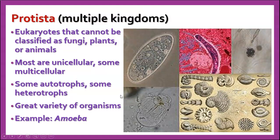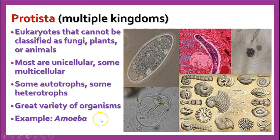The Protista — multiple kingdoms here. These are, by definition, eukaryotes that cannot be classified as fungi, plants, or animals. They're kind of like where you put stuff that doesn't fit anywhere else. I often describe them as being the junk drawer of the kingdoms — just extra things that don't really fit anyplace else in particular. Most are unicellular, although there are some multicellular ones like the seaweeds. Some are autotrophs, some are heterotrophs. There's a large variety: diatoms that make elaborate shells, Paramecium that swims fast through freshwater, and examples like amoeba.